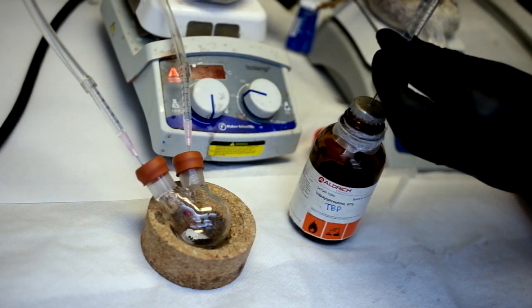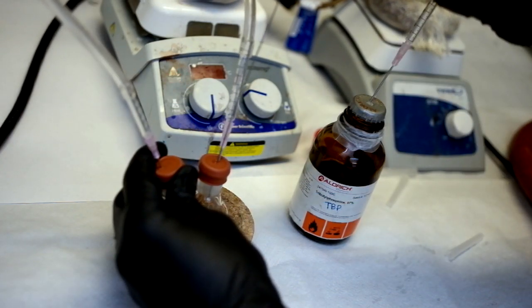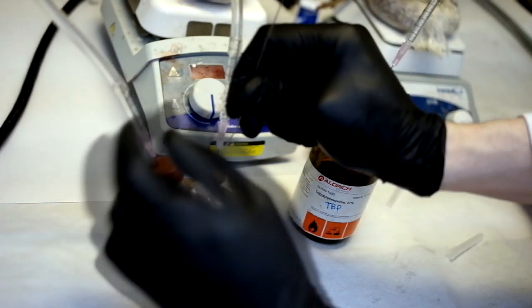Be sure to hold onto the needle of the syringe to prevent leakage. Inject the TBP directly into the precursor flask.